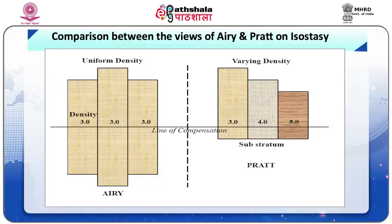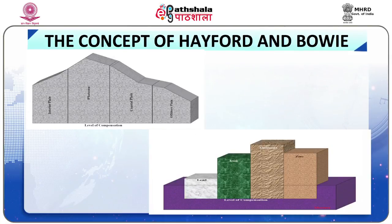Making a comparative analysis of Airy and Pratt's views, Bowie observed that the fundamental difference is that Airy postulated uniform density with varying thickness, while Pratt postulated uniform depth with varying density, according to Stiers (1937). Figure 3 explains this fundamental difference. Hayford and Bowie propounded their concept of isostasy almost similar to Pratt's concept.